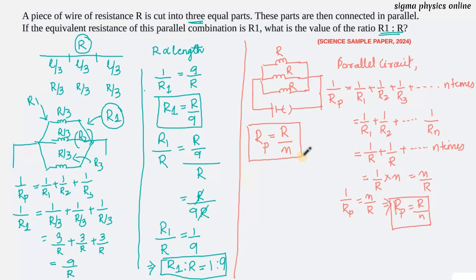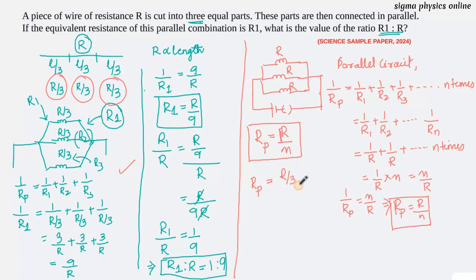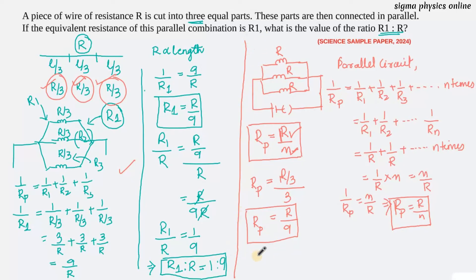Using this shortcut for our question: there are 3 resistors each with a value of R/3. So Rp = (R/3) / 3 = R/9. The equivalent resistance is given as R1, so R1 = R/9. Therefore R1/R = 1/9, or R1 to R is 1 to 9. This is a much easier and faster way to solve the problem.